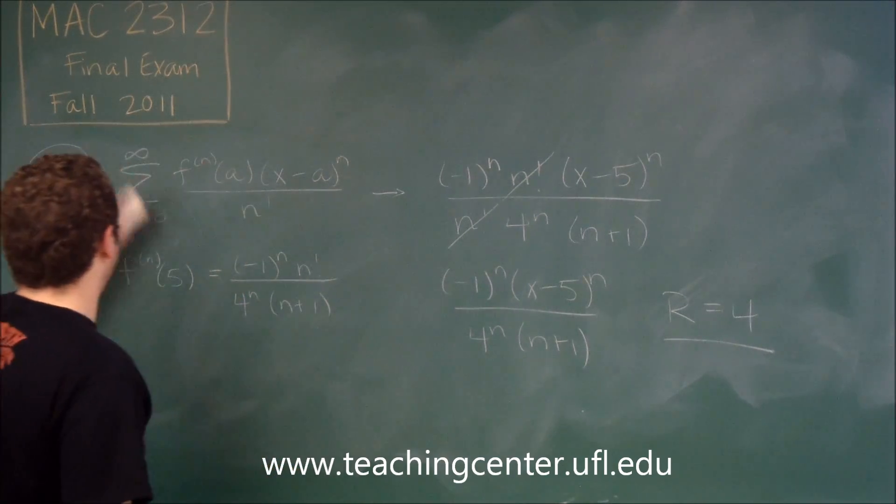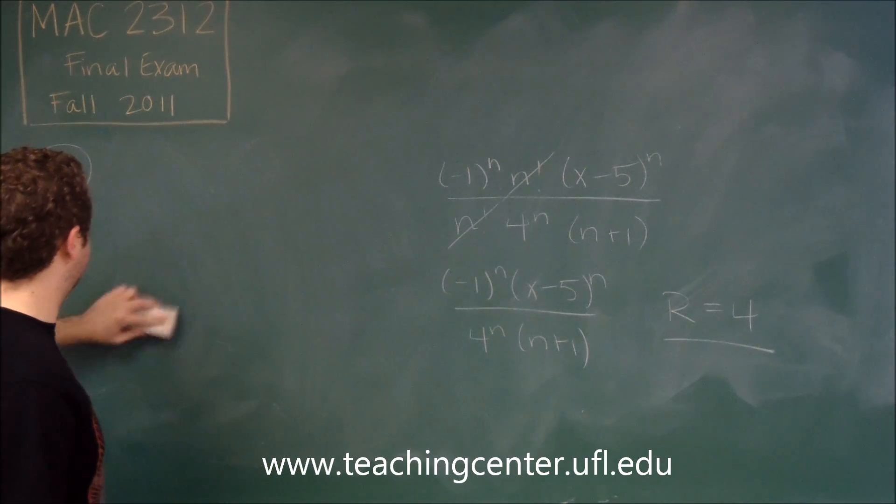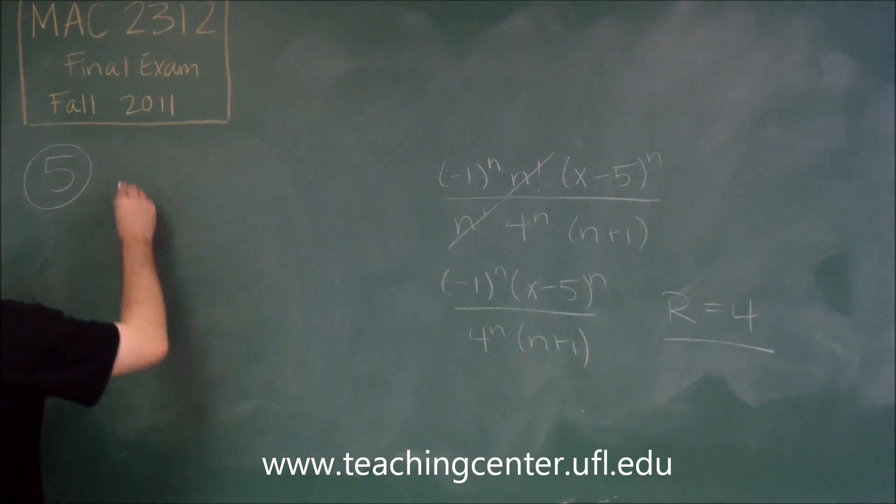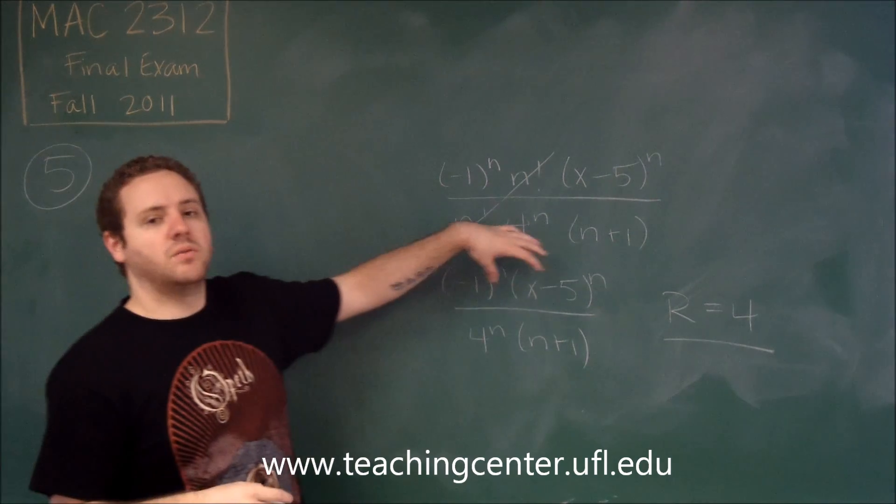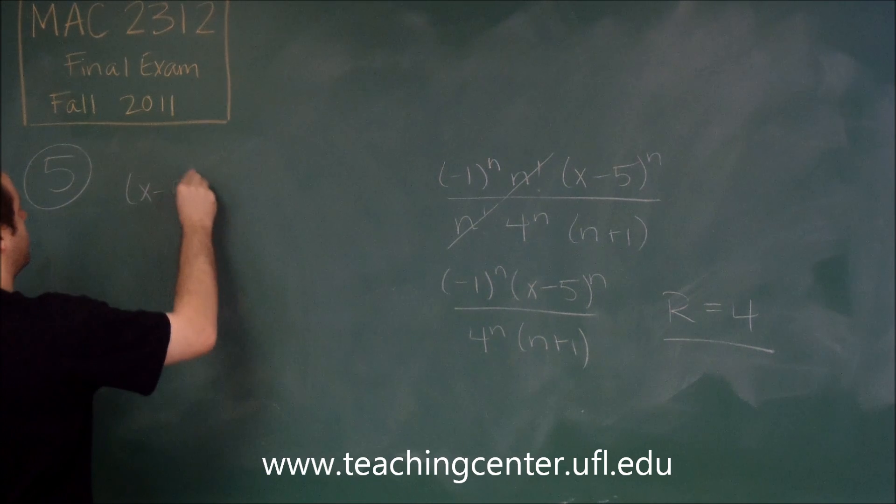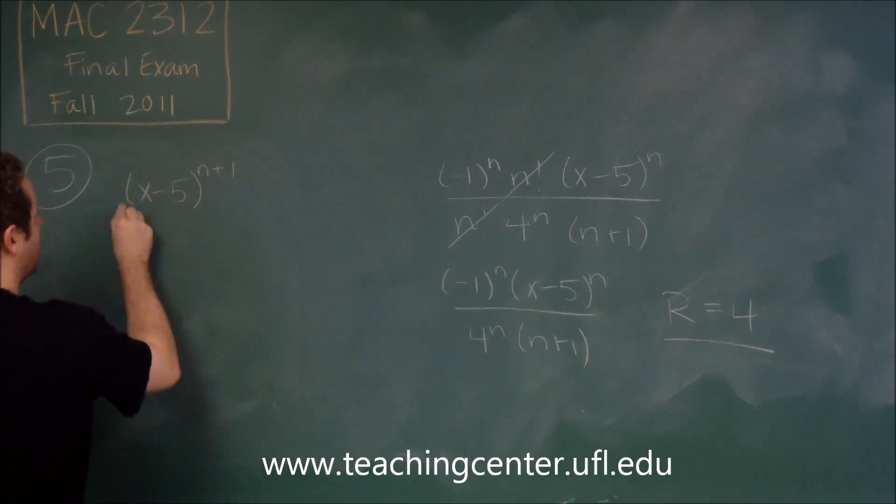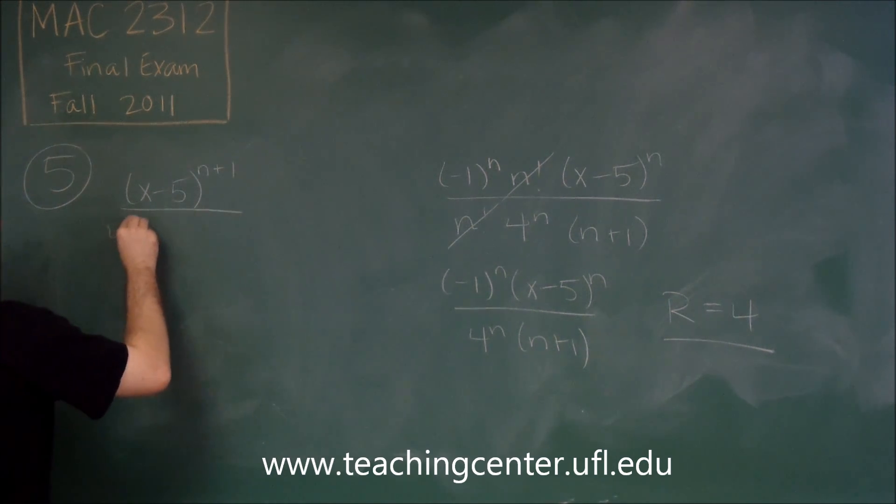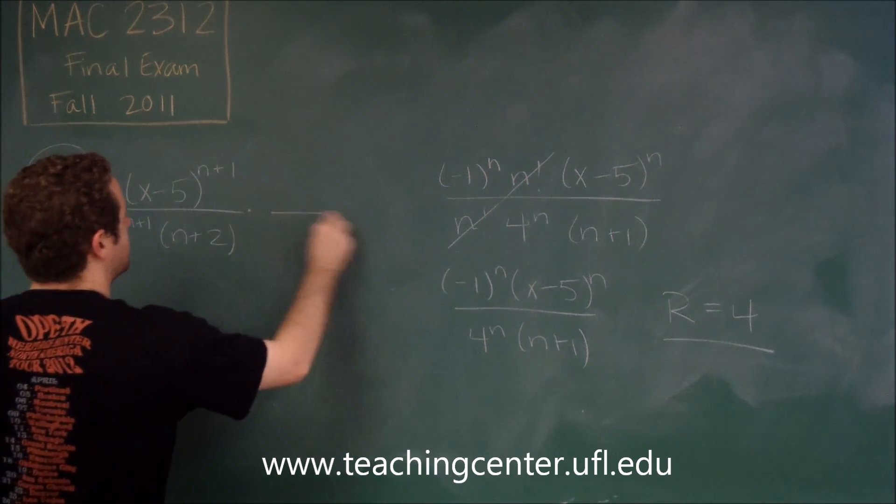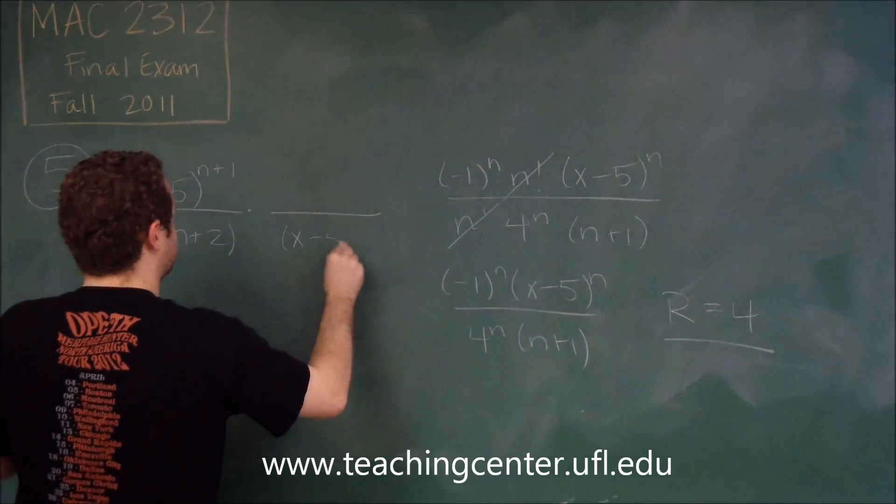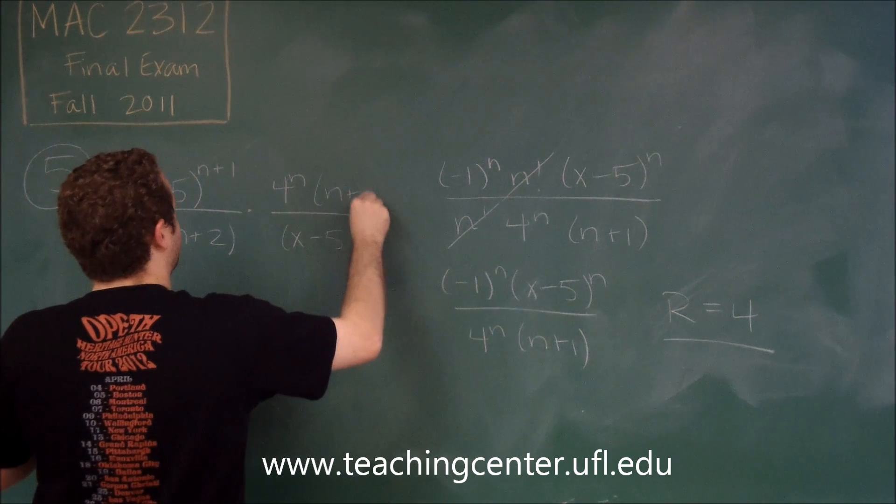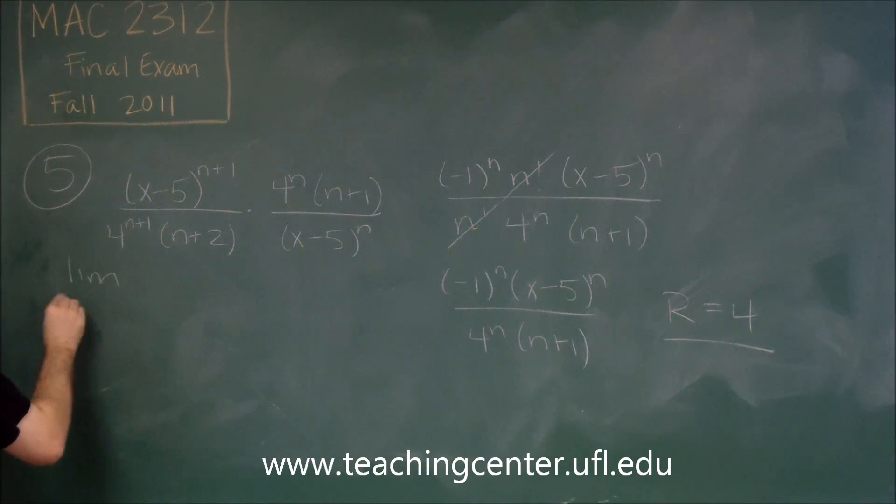So let me show you how you would get that using the ratio test. We take the n plus 1th term and we don't use the alternating part, remember the ratio test uses absolute value. So we take the n plus 1th term and this would be n plus 2 on the bottom times the reciprocal of the nth term, n plus 1. And remember we're doing the limit as n goes to infinity of this.